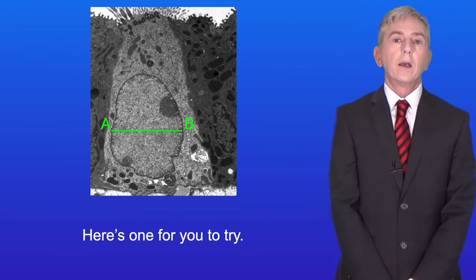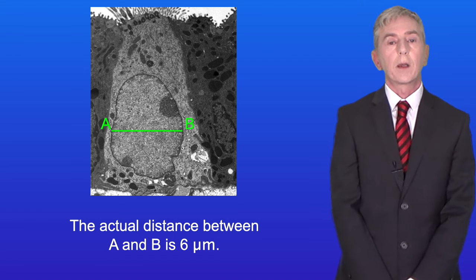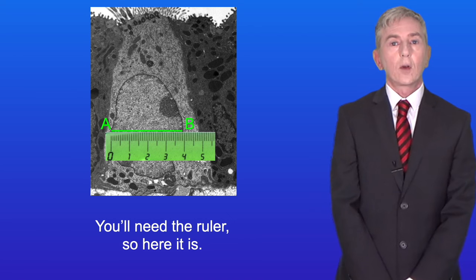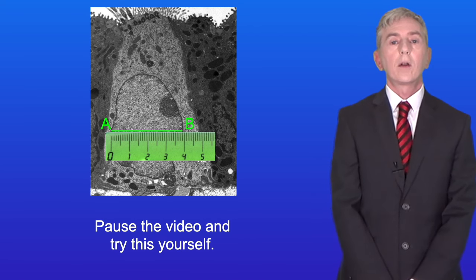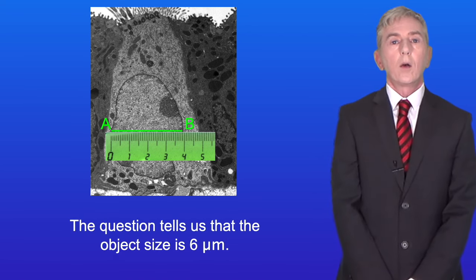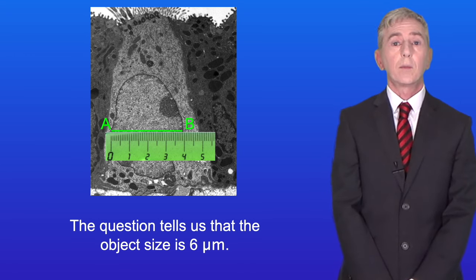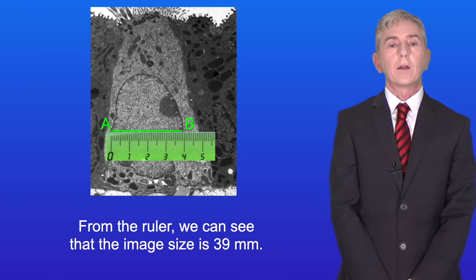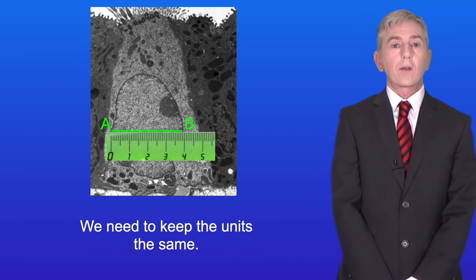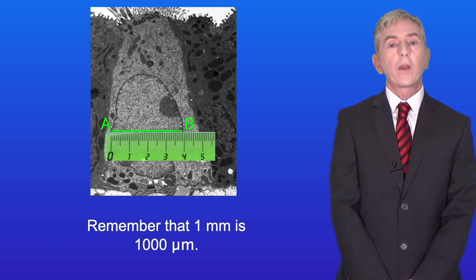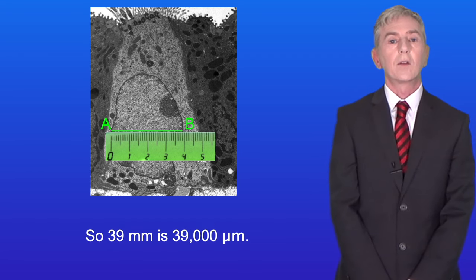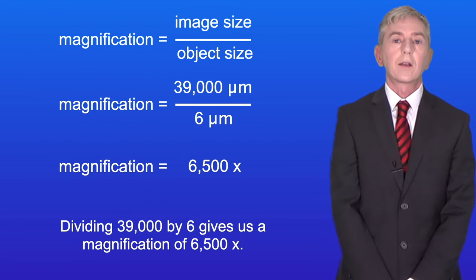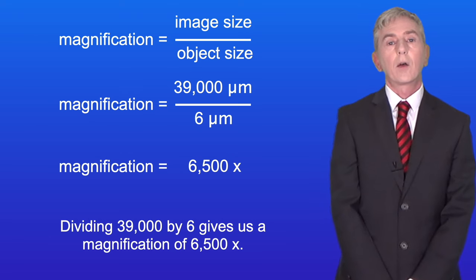Here's one for you to try. The actual distance between A and B is 6 micrometers — determine the magnification of this image. From the ruler, the image size is 39 millimeters. We keep the units the same: 1 millimeter is 1,000 micrometers, so 39 millimeters is 39,000 micrometers. Dividing 39,000 by 6 gives us a magnification of 6,500 times.